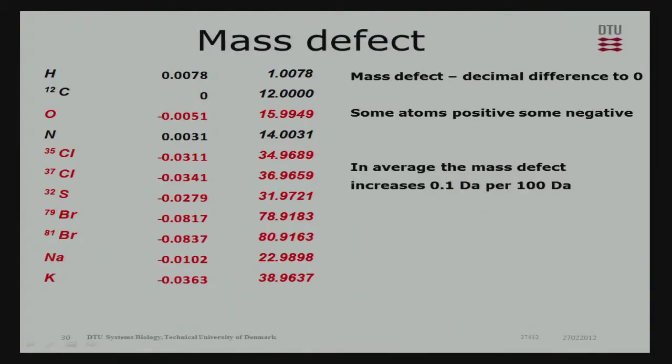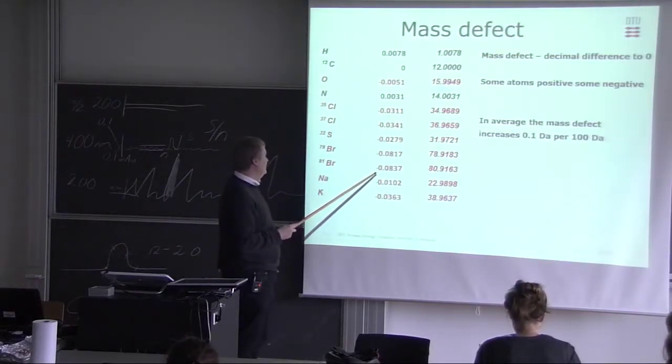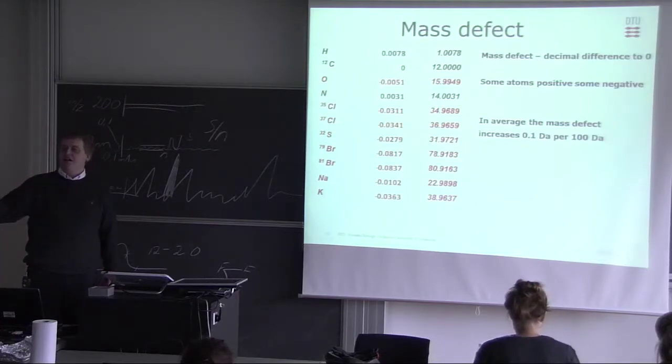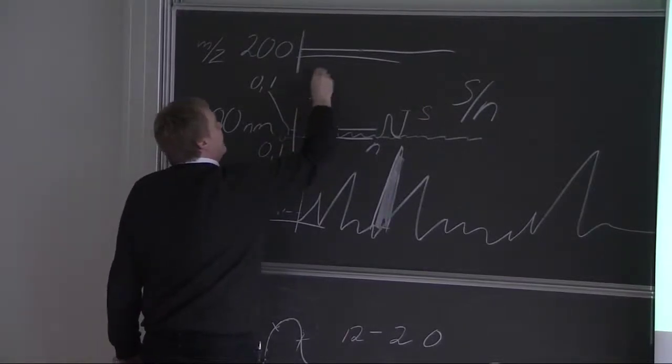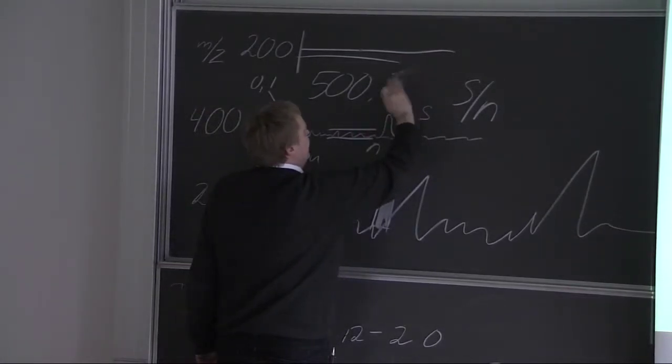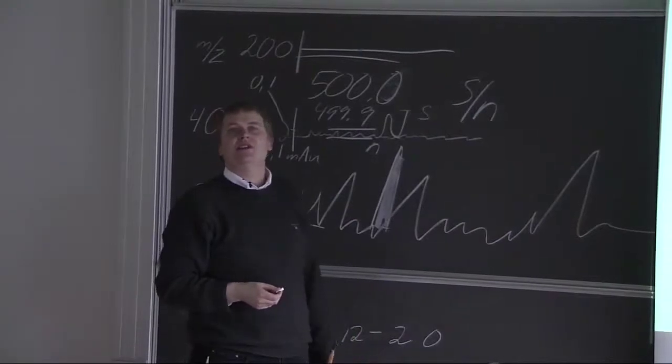We can also express if this is a mass defect. So to see what is the difference. Like oxygen actually drags down the decimals. Chlorine drags it down much more. So the sulfur and bromine was hydrogens go up. So if you look at lipids, you know, they're mainly hydrogen and carbon. Up at about 500 or so, you're going to have a decimal at about 0.5. Whereas if you had something with very few hydrogens in and a lot of chlorines, the decimals could be 0 or it could even be that it was 499.9. So we can actually, in some cases, we can use this.